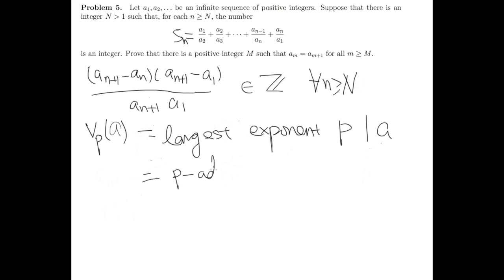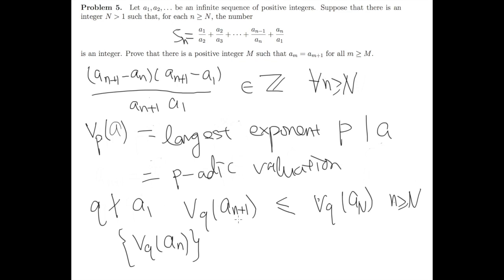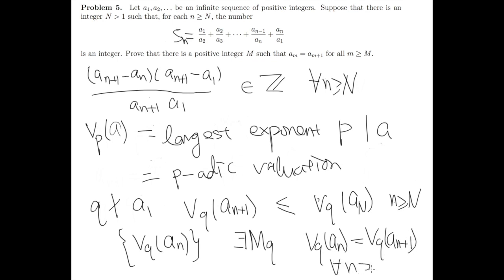It has the fancy name 'p-adic valuation', but I'll just call it v_p(a). Previously we showed that if Q is a prime number that does not divide a_1, then v_Q(a_{n+1}) must be smaller than v_Q(a_n) for any n larger than some threshold. This tells us v_Q(a_n) is a decreasing sequence. Since they are all integers and decreasing, there exists some m_Q such that v_Q(a_n) equals v_Q(a_{n+1}) for any n larger than m_Q.